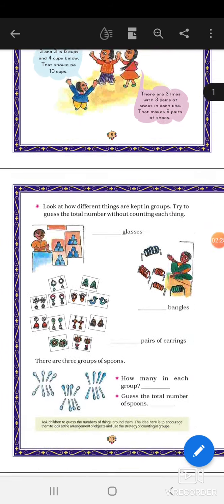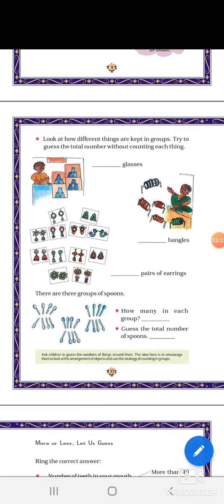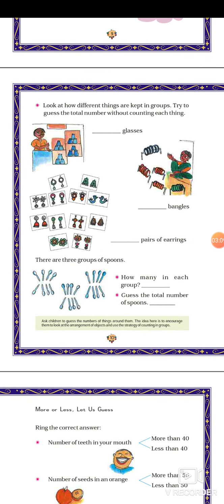So now we will go to the next page. Look at how different things are kept in groups. Try to guess the total number without counting each thing. So tell me how many groups of glasses. Total numbers in one group: 1, 2, 3. Then another group: 1, 2, 3. There are 4 groups, and in each group there are 3 glasses. So total 12 glasses are there.